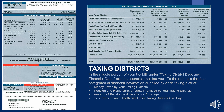In the middle portion of your tax bill, under taxing district debt and financial data, are the agencies that tax you. To the right are the four categories of financial information supplied by each taxing district: money owed by your taxing districts; pension and health care amounts promised by your taxing districts; amount of pension and health care shortage; and percentage of pension and health care costs taxing districts can pay.